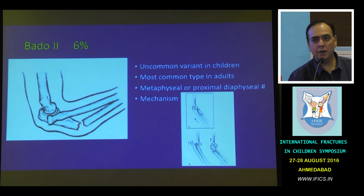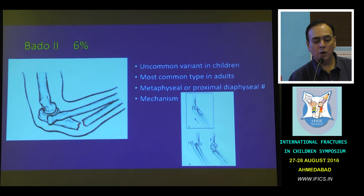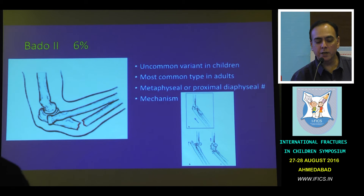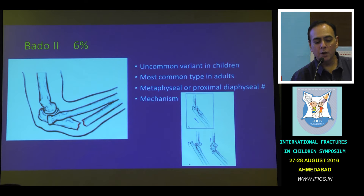Bado Type 2 injuries are fairly uncommon in children — more of an adult fracture pattern. The fracture in the ulna is metaphyseal or proximal diaphyseal, and the radial head dislocates posteriorly. This results from a fall on an approximately 60-degree flexed elbow, with a longitudinal force that either dislocates the elbow or causes the ulna to fail in the metaphyseal region.